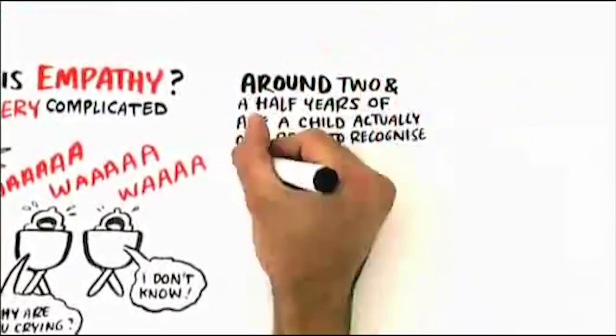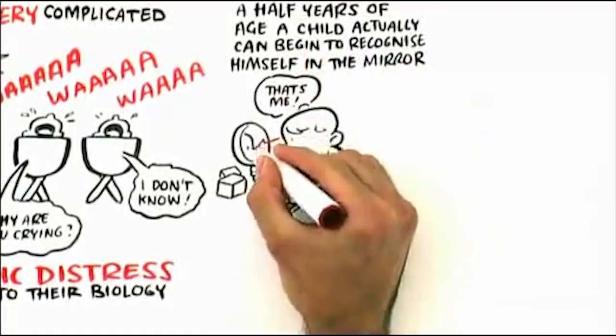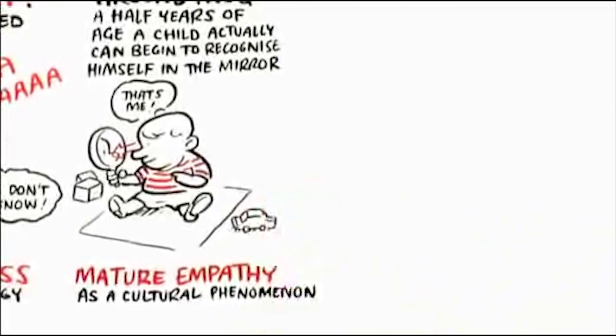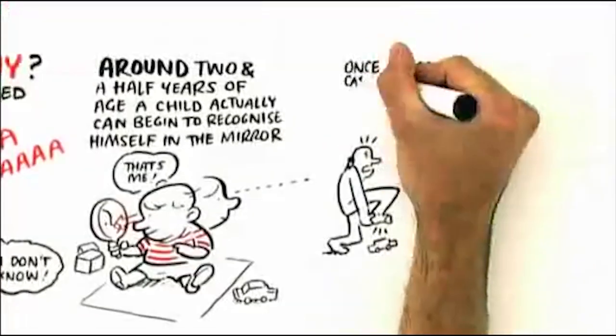Around two and a half years of age, a child actually can begin to recognize himself in a mirror. That's when you begin to mature empathy as a cultural phenomenon. And that is once a toddler can identify themselves, then they know that if they're observing someone else have a feeling.